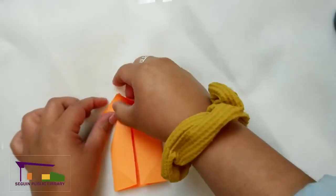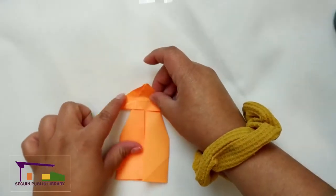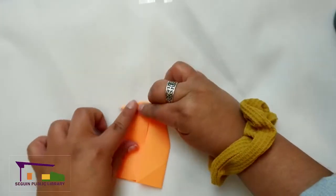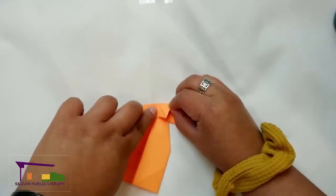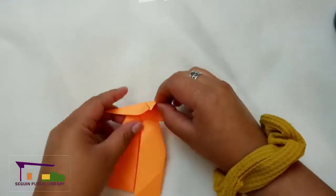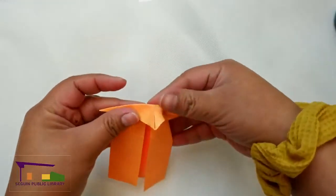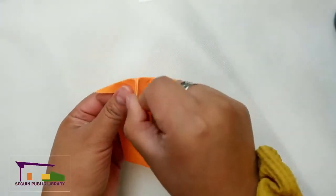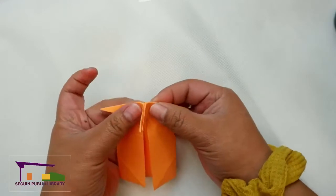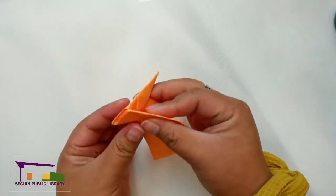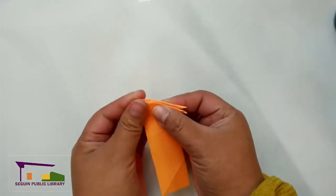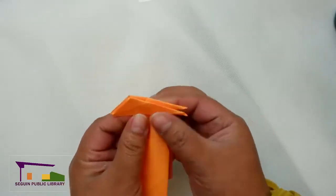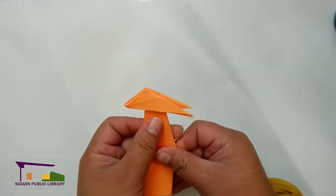And we're going to do the exact same on the opposite, making this edge meet the bottom. Creasing it up to that central line of the fox's face. And what this lets us do is create kind of three peaks, the nose and the two ears. And we should be able to fold this back here. And that's the basis for our fox's head.